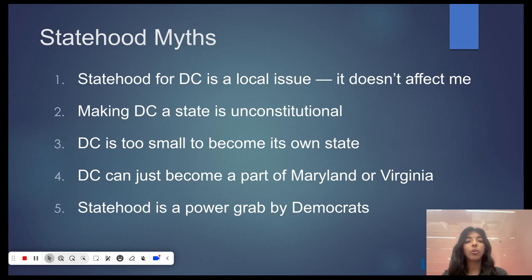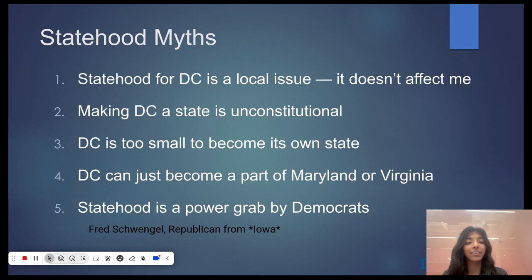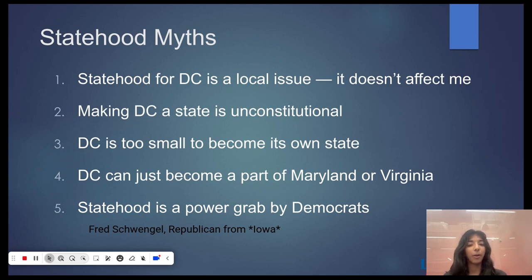Lastly, opponents often accuse statehood advocates of a power grab. We are in a very polarized political atmosphere now. But the first DC statehood bill of the modern era was introduced by Fred Trangle, a Republican from Indiana, and Ron Dellums, a Democrat from California. While more than likely the first congressional delegation from the new state would be Democrat, there is no reason to think it will always be that way. Hawaii and Alaska were admitted together to balance party affiliations, and these two states have since flipped.